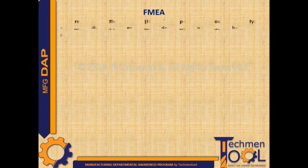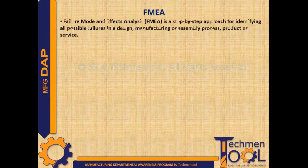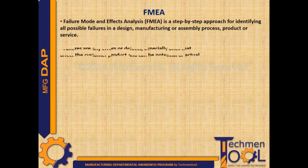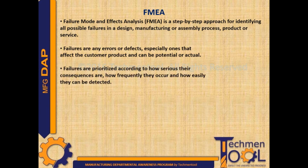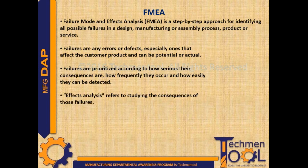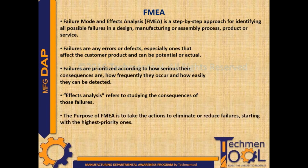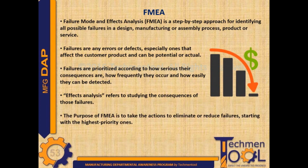One of the important activities is FMEA. FMEA, or Failure Mode and Effects Analysis, is a step-by-step approach for identifying all possible failures in a design, manufacturing or assembly process, product, or service. Failures are any errors or defects, especially ones that affect the customer, and can be potential or actual. Failures are prioritized according to how serious their consequences are, how frequently they occur, and how easily they can be detected. Effects Analysis refers to studying the consequences of those failures. The purpose of FMEA is to take actions to eliminate or reduce failures, starting with the highest priority ones.